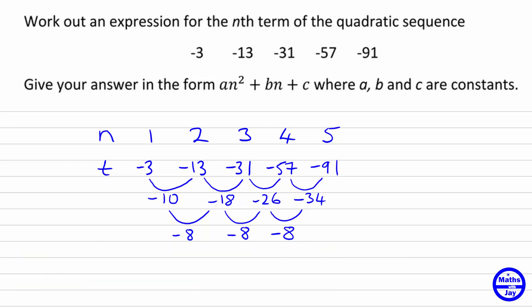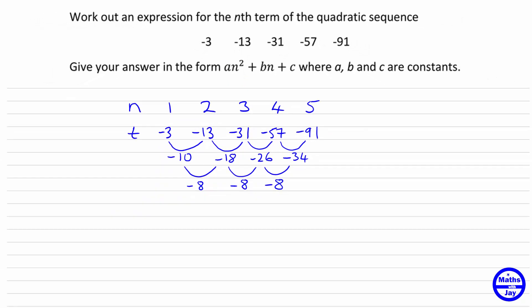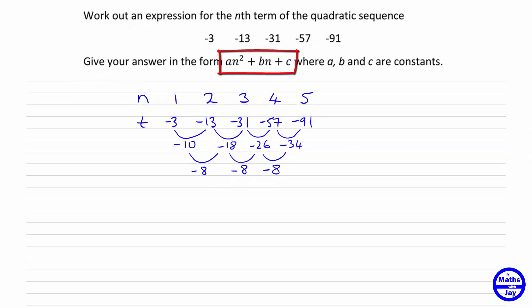What we're going to do next is divide this number by 2 to get the value of a, to get the coefficient of n squared in this formula. So we know that our formula is going to be minus 8 divided by 2 times n squared plus something else plus bn plus c. So we know that we've got minus 4n squared plus bn plus c.